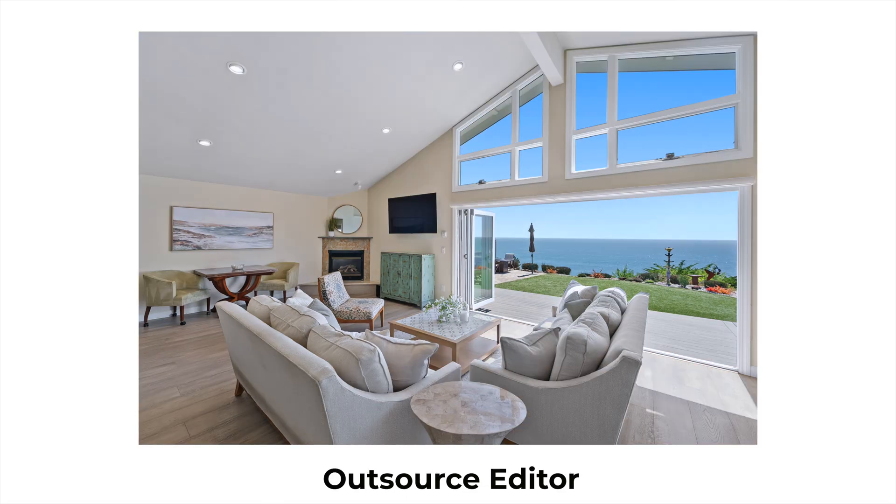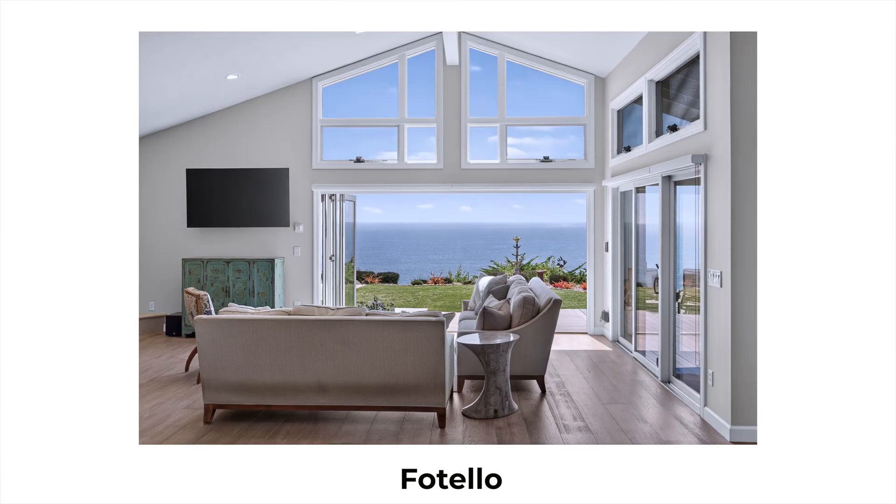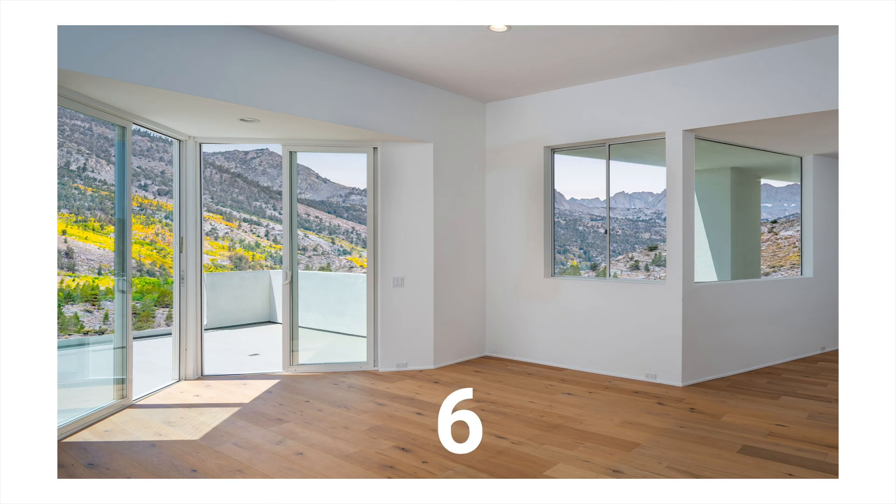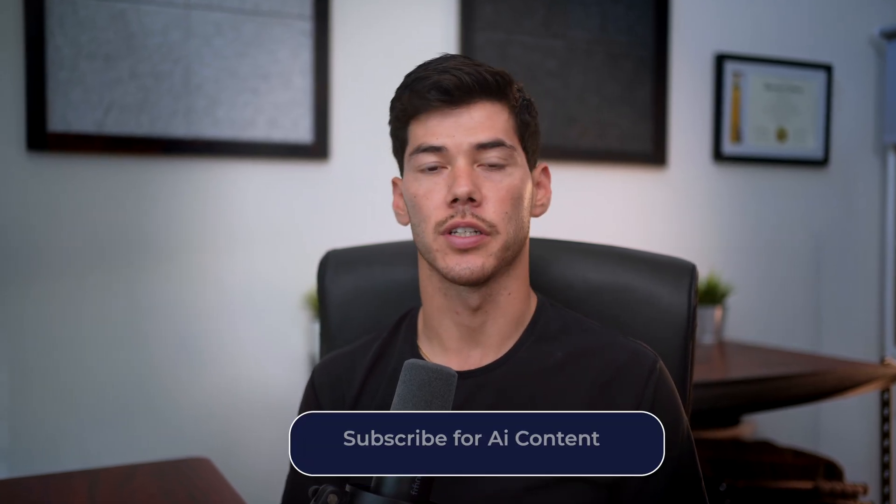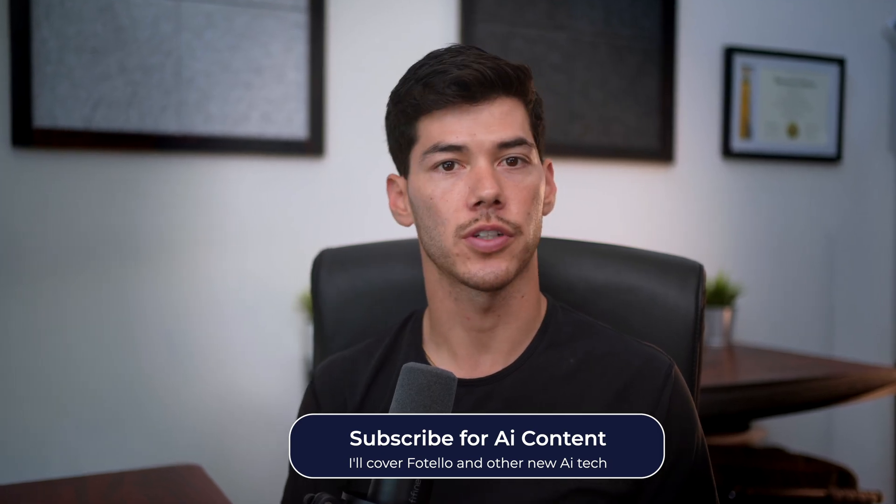I still rely on traditional editing in certain situations. Sky replacement is one example I mentioned earlier, but another is on high-end properties like this one with ocean views. I don't have any precise control, and the AI actually desaturated the water, making it look worse. This is because the AI only has one setting for window pulls right now, and it slightly tones them down rather than enhancing the view — whereas with manual editing you can decide precisely how you want to pull each window. At the moment, I'm using Fitello for around 80% of my work and default to traditional editing for these specific use cases. But we're still early, and as this technology continues to improve, I'll be making more content to show you new features, and I'll likely be sending more of my workflow through AI editing in the future.